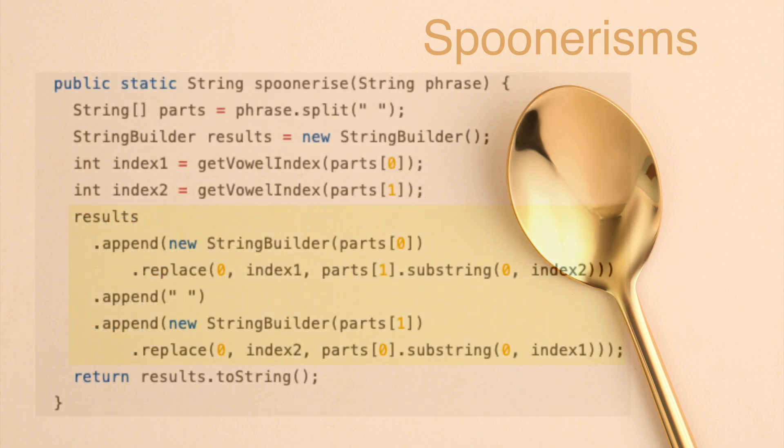Back inside the calling method, the append method is called on the result string builder, with the new string builder instantiated containing the first string in the parts array. We then replace the characters at index position 0 to the index position of index1, with the substring of the second part of the incoming string from index 0 to the index position of the value of index2.